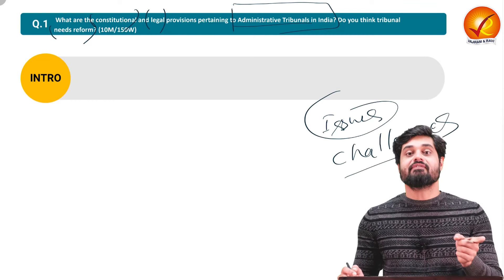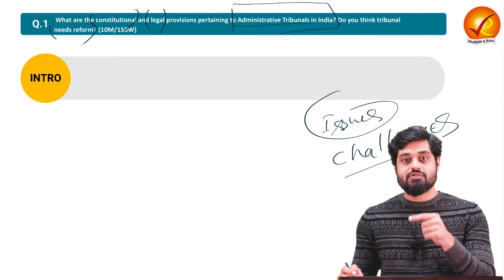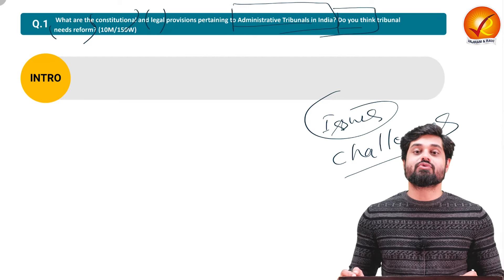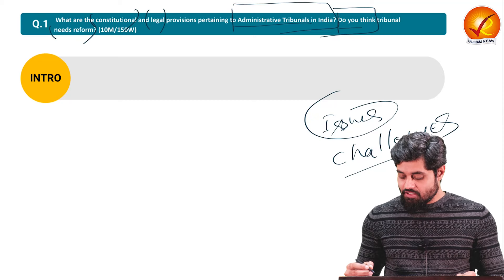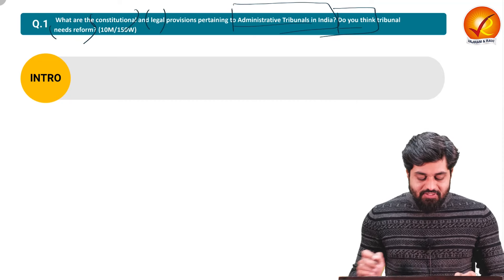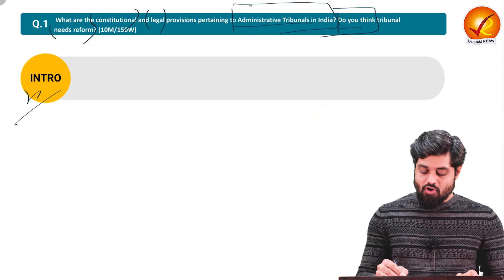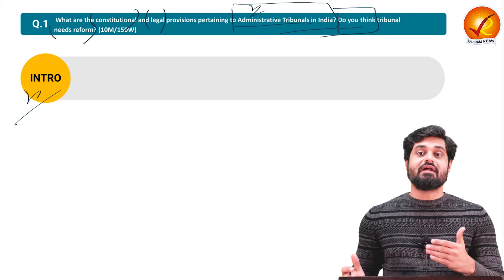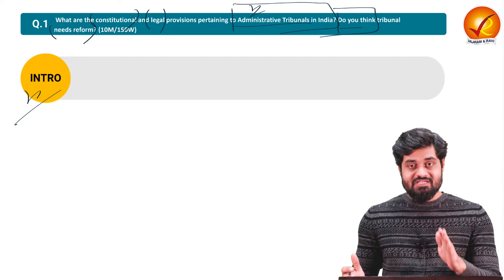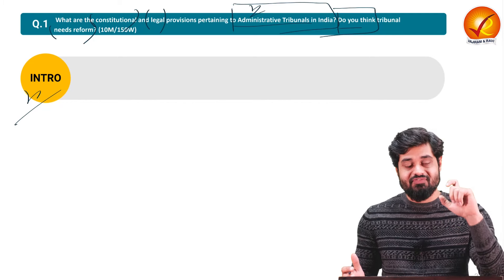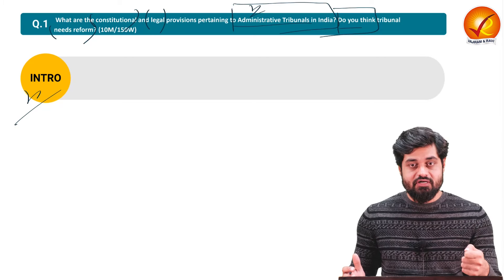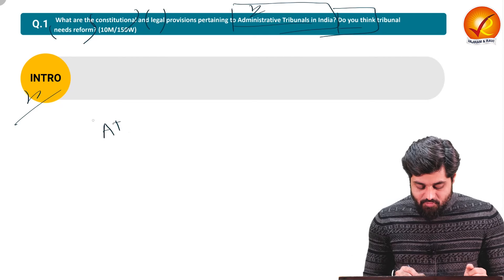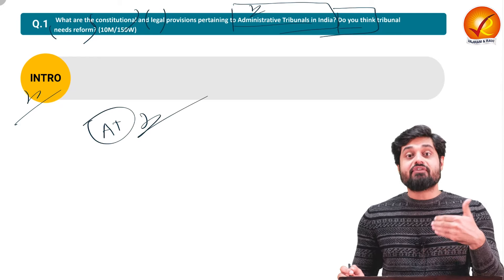Once we address the issues and challenges arising in the tribunal system, we can then explain why reforms are needed. So first we highlight the problems, then explain the need for reform. Now let's come to the introduction part. Administrative tribunals are there to settle administrative disputes — they are specialized tribunals given the function of providing speedy redressal to certain kinds of disputes arising from administrative issues.